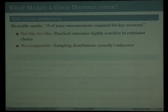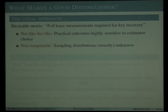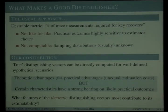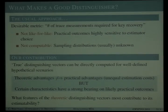Moreover, the statistical methods used to predict the sample size required need you to know or approximate the sampling distribution of the estimator, which is only possible in very special circumstances. Without the sampling distribution, the best an evaluator can do is perform experiments with simulated or measured traces. Our alternative approach concentrates on theoretic outcomes, which bypasses altogether the confounding problem of estimation. Rather than analyzing estimated distinguishing vectors from practical experiments, we directly compute the true vector values for a variety of well-defined leakage scenarios.